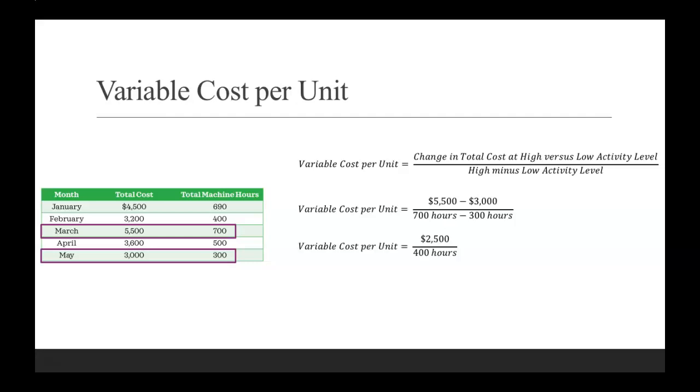That's our activity level from March and May. That simplifies down into $2,500 divided by 400 hours, or a variable cost per unit of $6.25 per hour.